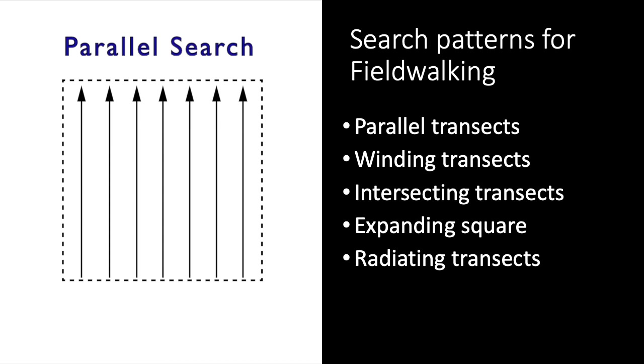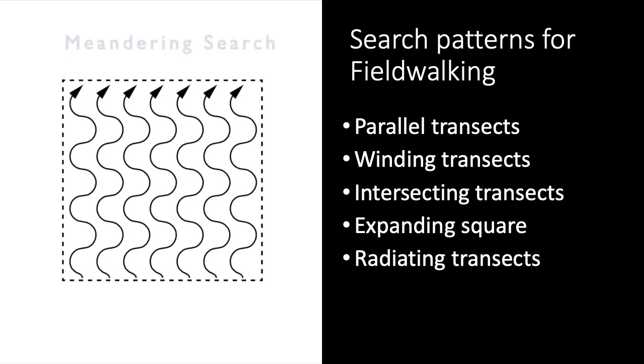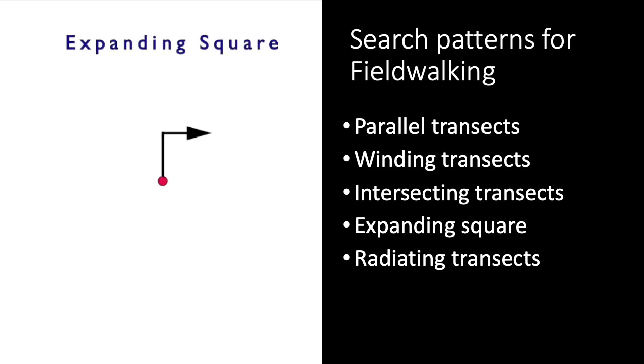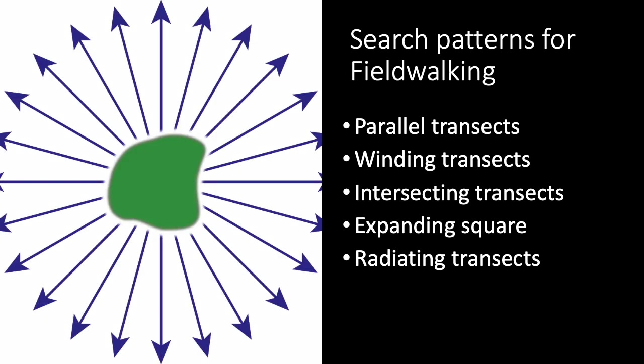As mentioned in my introductory video on survey, one of the most common patterns for field walking is parallel transects, although some surveys use meandering transects with the idea of altering the direction from which surveyors look at the ground. Some surveys can involve a second set of transects at an angle to the first. In appropriate circumstances, we could also employ expanding square search or transects that radiate out from the perimeter of a known site.